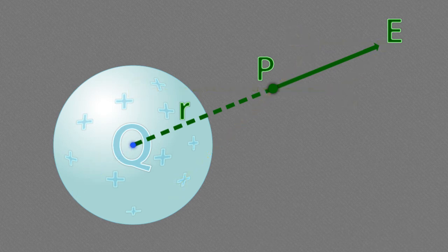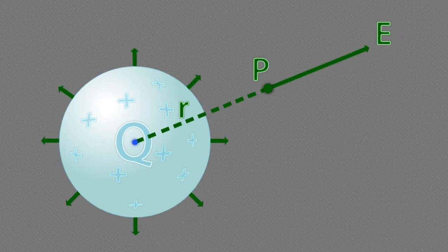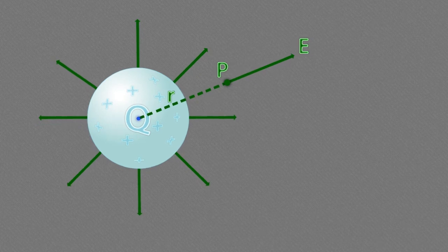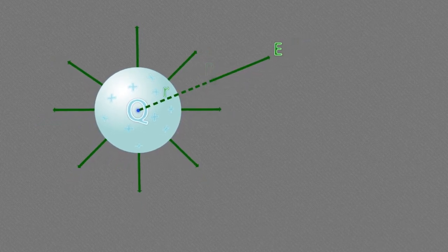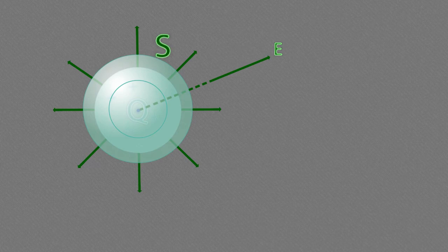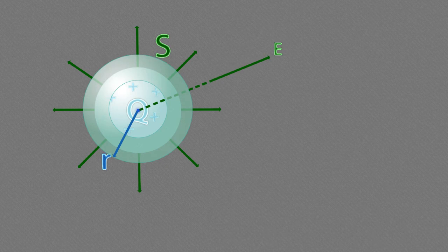Como P es un punto arbitrario, el campo en cualquier otro punto también será radial, y por ello se representan las líneas de campo eléctrico en la forma indicada. Ahora se elige una superficie esférica cerrada S alrededor de la esfera cargada en donde se espera que E sea constante. La superficie esférica S tiene un radio R concéntrico con la distribución de carga. DA es un elemento diferencial de superficie paralelo al campo eléctrico.